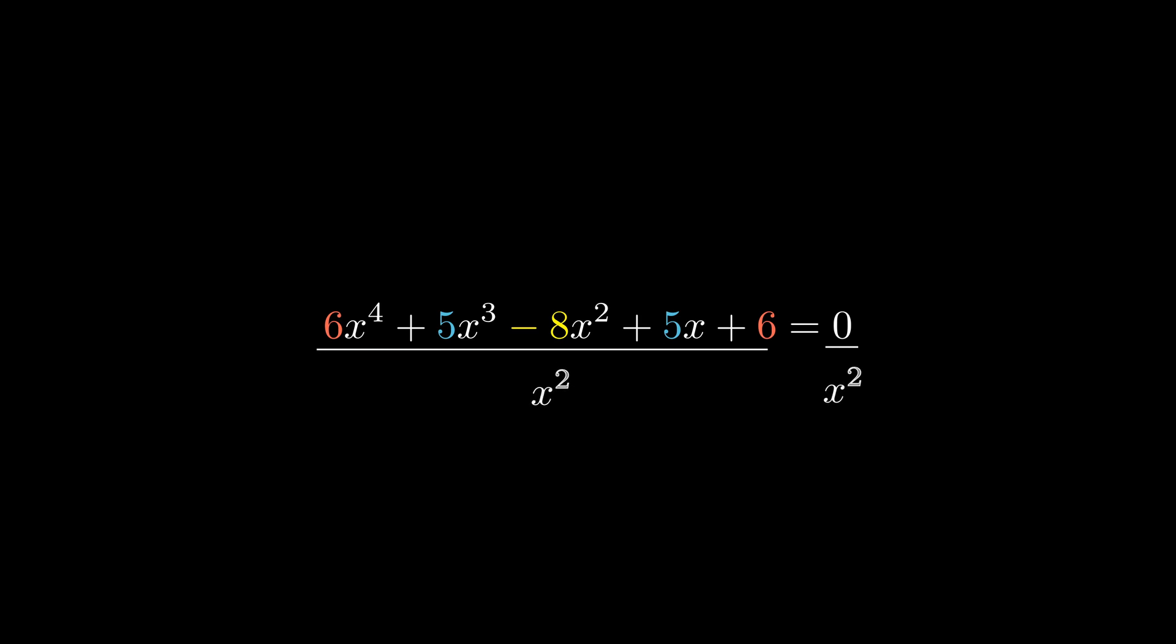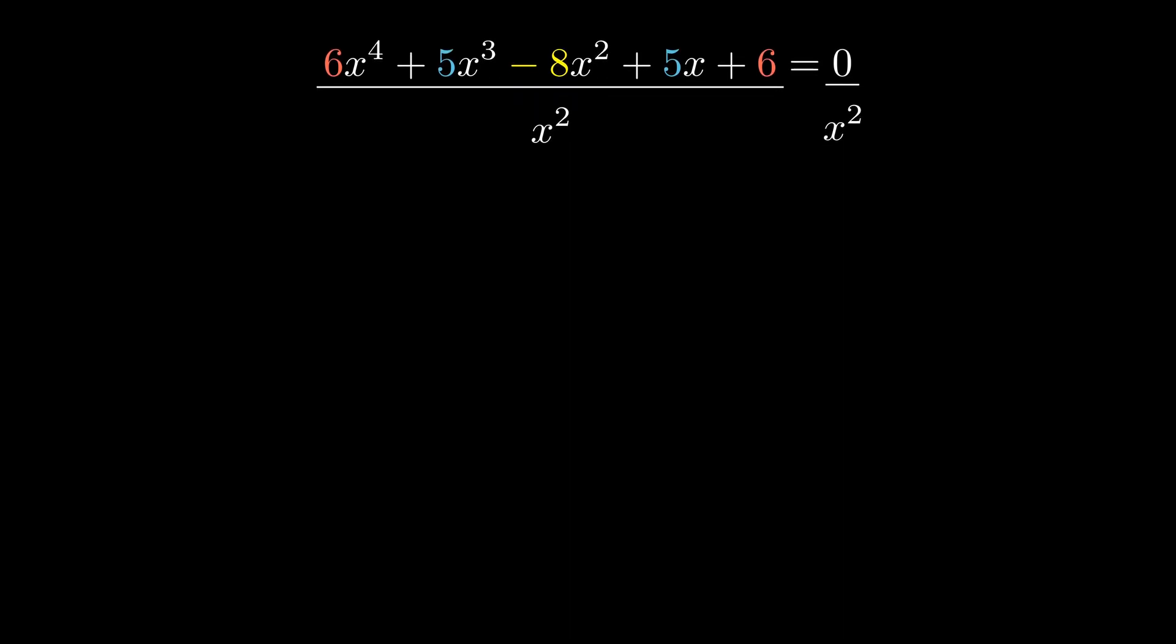To start off, we are going to divide both sides by x squared. Now simplify the terms and you get this. Since the coefficients are symmetrical, you can factor out terms with the same coefficient.